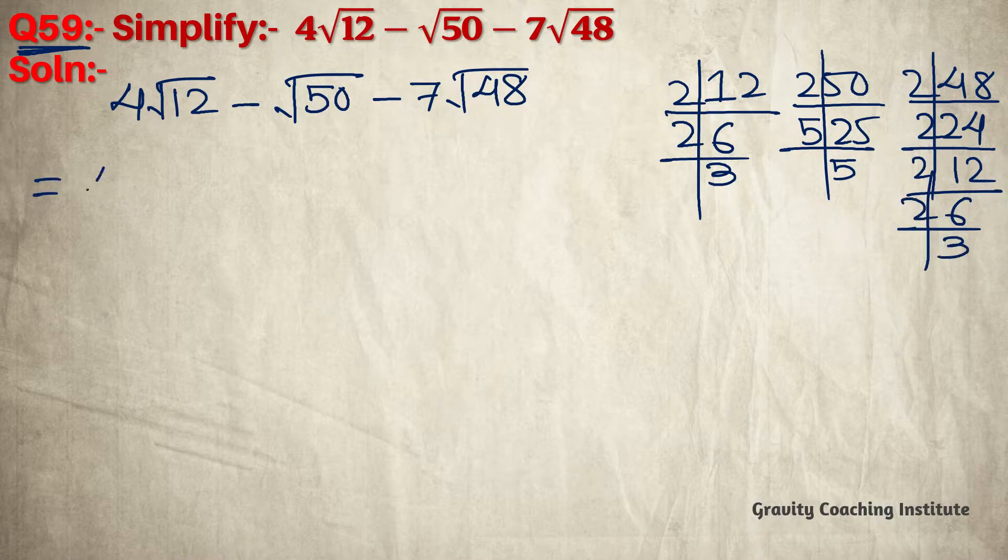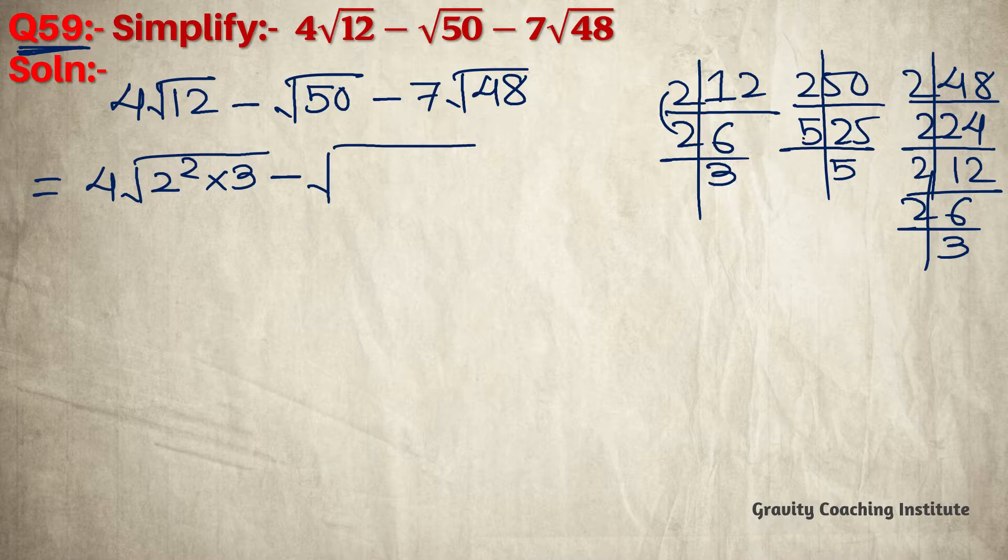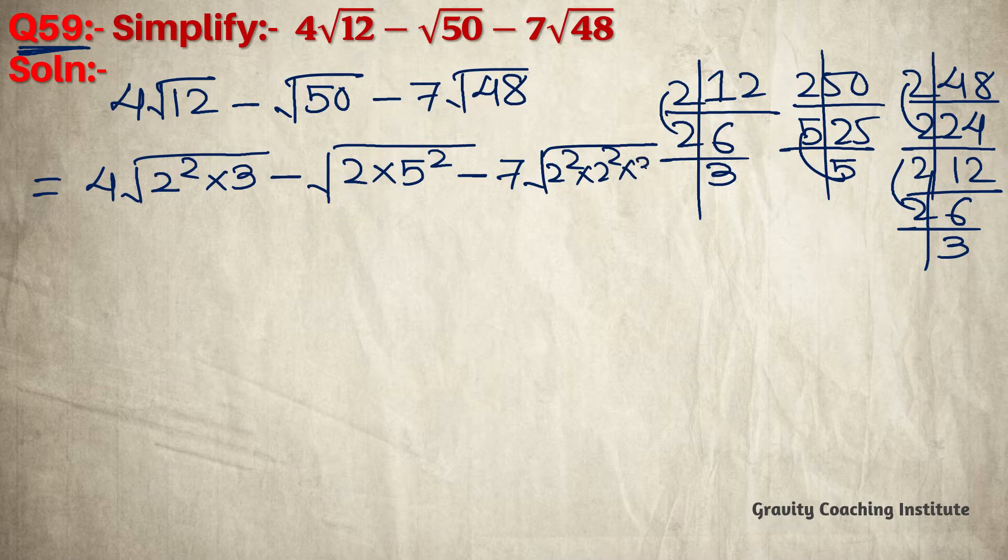In this, 12 has 2 appearing in a pair, so it's 2² × 3. In 50, 5 appears in a pair, so it's 2 × 5². And in 48, 2 appears in pairs twice: 2² × 2² × 3.